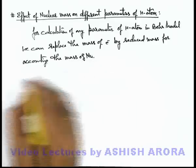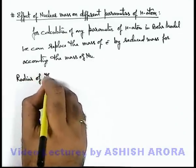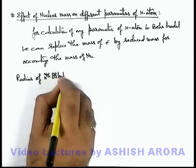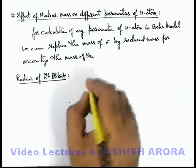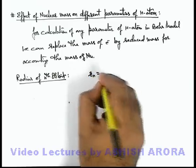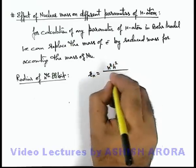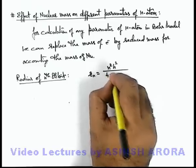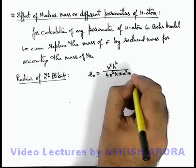Like if we talk about the radius of nth orbit in case of hydrogen atom, we can directly write the radius of nth orbit expression is given as n²h² by 4π²kze²m. Here m is the mass of electron.